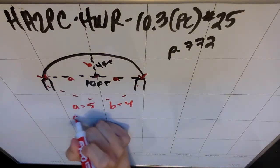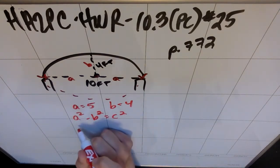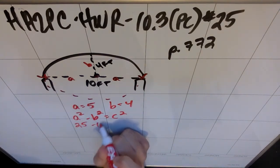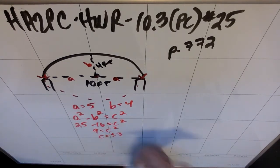And for an ellipse, we know that A squared minus B squared equals C squared. It's not Pythagorean theorem. So that's 25 minus 16 equals C squared. 9 is my C squared, so C is plus or minus 3.